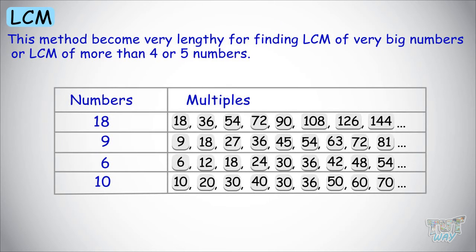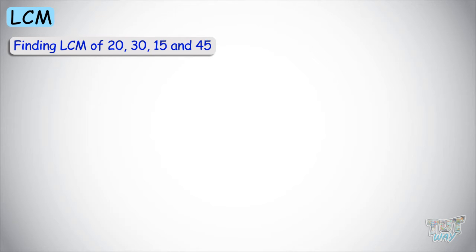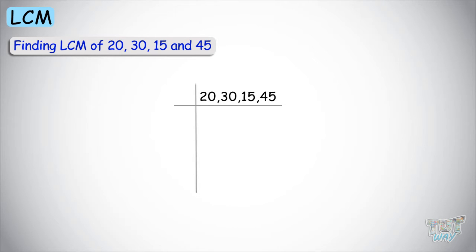This method quickly becomes very lengthy if we have 4 or 5 or more numbers. So if you want to find the LCM of more than 4 or 5 numbers, there is another way. Here we have an example: we need to find the LCM of 20, 30, 15, and 45. Write all these numbers in a row. The entire process is similar to finding the prime factorization of a number. The smallest prime number is 2, so we use 2 to divide into all these numbers.